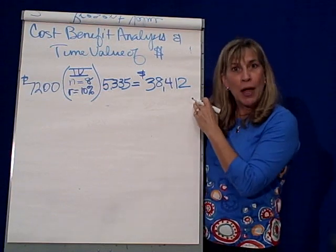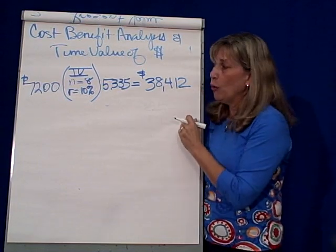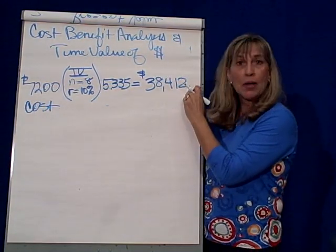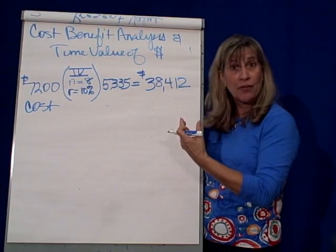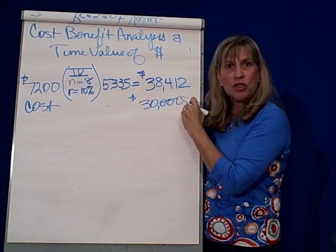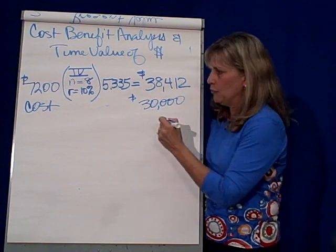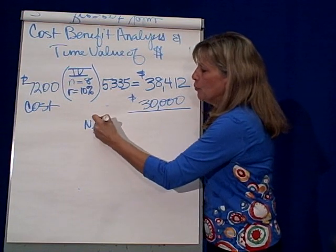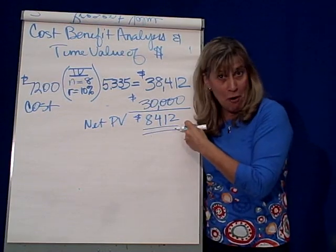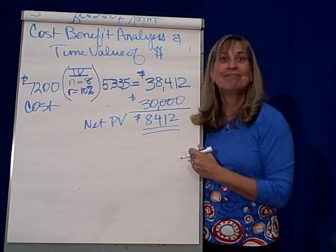I will compare this benefit of owning this machine — the justification of why I should go shopping — with the cost. The cost of the machine in today's dollars, because remember this is in today's dollars since we found the present value, is $30,000. So if I spend $30,000 for a machine, I will have $38,412 of benefit from owning that machine. My net present value is $8,412. Am I better off if I buy this machine? You bet. What's your recommendation? Go shopping!